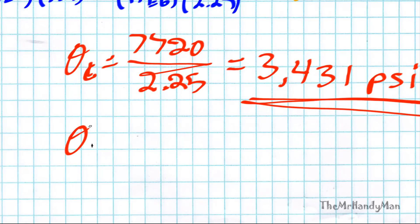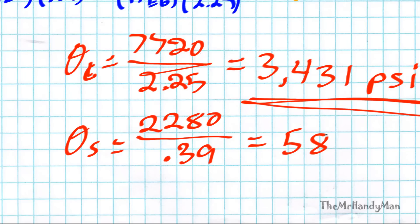The stress of steel is going to be similar, calculated in a similar fashion. Two thousand two hundred eighty pounds over point three nine, and that's five thousand eight hundred and forty six PSI.